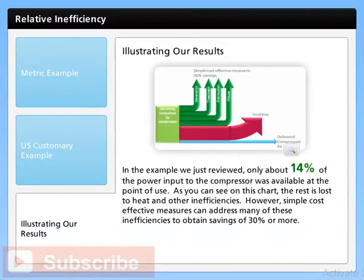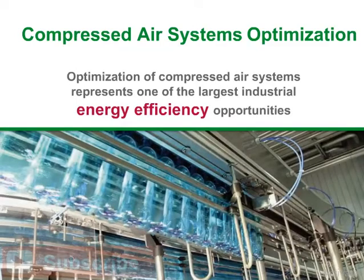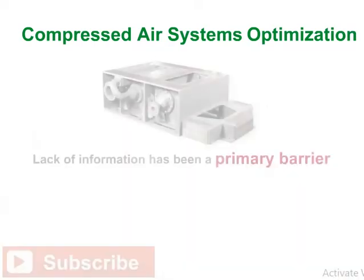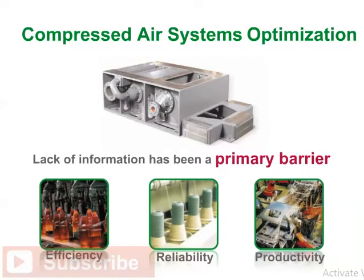In the example we just reviewed, only about 14% of the power input to the compressor was available at the point of use. The rest is lost to heat and other inefficiencies. However, simple cost-effective measures can address many of these inefficiencies to obtain savings of 30% or more. Optimization of compressed air systems represents one of the largest industrial energy efficiency opportunities. Lack of information has been a primary barrier to realizing substantial improvements in efficiency, reliability, and productivity of industrial compressed air systems.